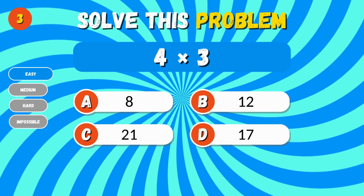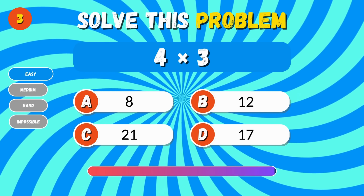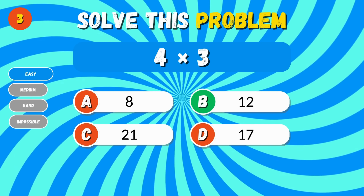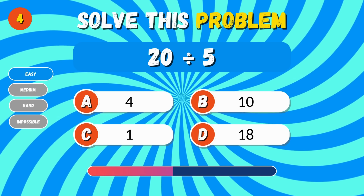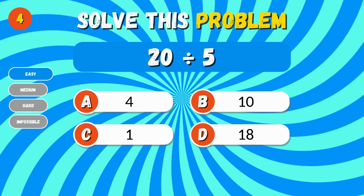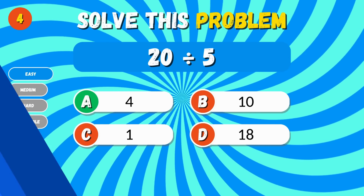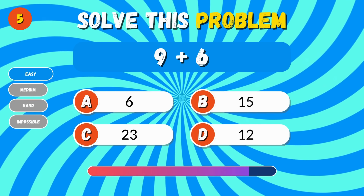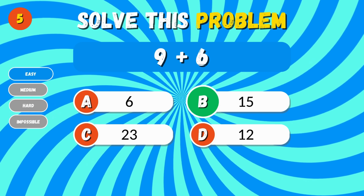4 times 3. 20 divided by 5. 4. 9 plus 6. 15.